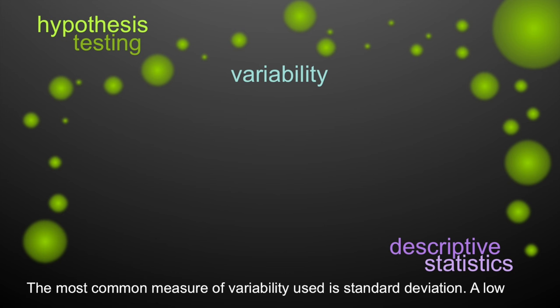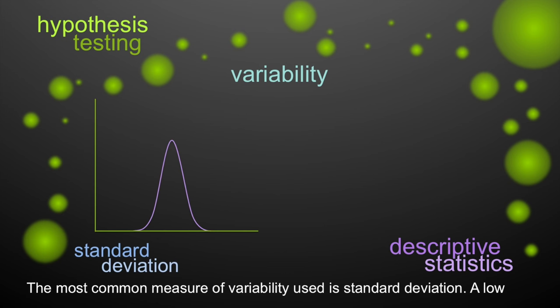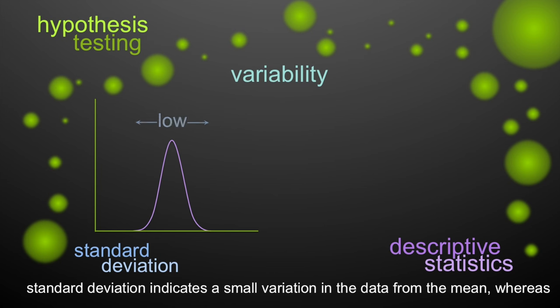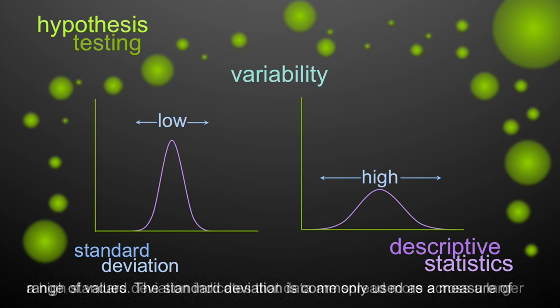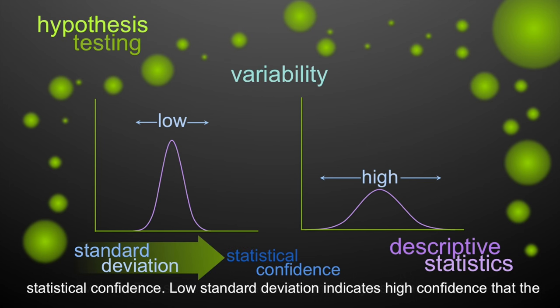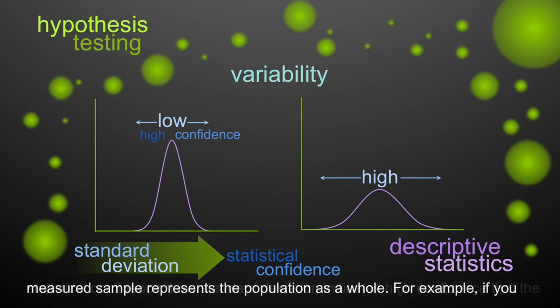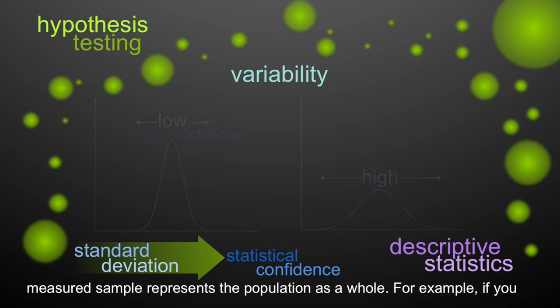The most common measure of variability is standard deviation. A low standard deviation indicates a small variation in the data from the mean, whereas a high standard deviation indicates data are spread more across a larger range of values. The standard deviation is commonly used as a measure of statistical confidence. Low standard deviation indicates high confidence that the measured sample represents the population as a whole.